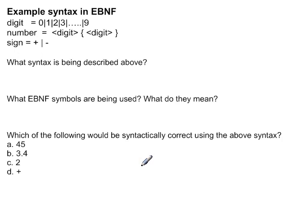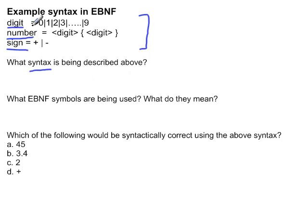We are now going to look at an example of EBNF. We have three components: digit, number, and sign, defined by EBNF. Digit is either 0, 1, 2, all the way up to 9. A number is a single digit from 0 to 9 followed by zero or more digits. A sign is either plus or negative.